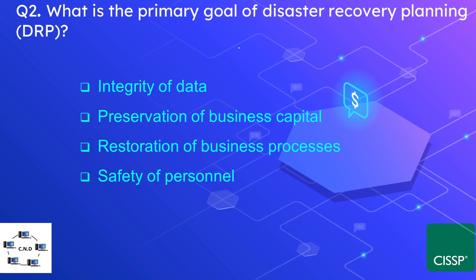Question number 2: What is the primary goal of the disaster recovery planning or DRP process? The options are integrity of data, preservation of business capital, restoration of business processes, and safety of personnel. The correct option is the safety of personnel. The safety of personnel is the most significant factor kept in mind while planning the DRP process.